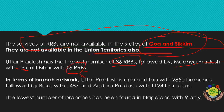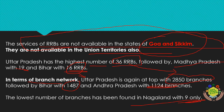In terms of branch network, Uttar Pradesh is again at the top with 2,850 branches for its 36 RRBs, followed by Bihar with 1,487 branches and Andhra Pradesh with 1,124 branches. Don't confuse the highest number of RRBs with the highest number of branches. The lowest number of branches is in Nagaland with only 9 RRB branches.